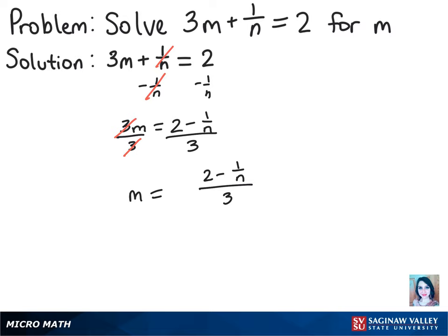We can simplify this fraction next, so let's multiply the numerator and the denominator by n using the fraction n over n, and then that will give us our final answer of m equals 2n minus 1 over 3n.